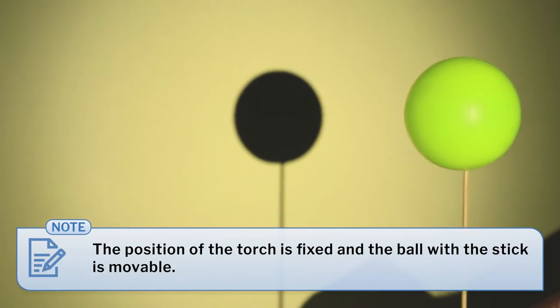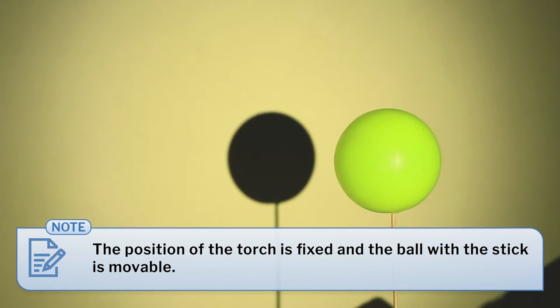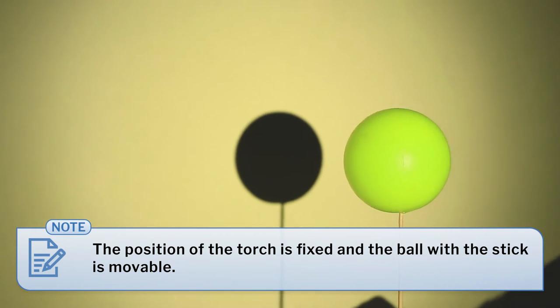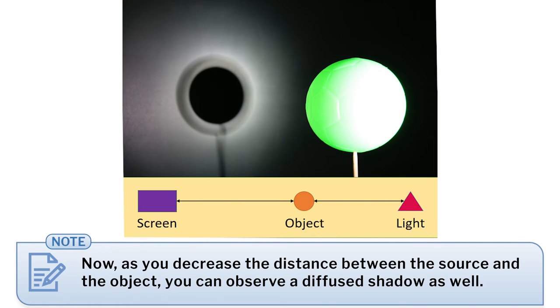As the distance between the torch and the ball is increased, we can see the umbra. But if that distance is decreased, we see a little lighter shadow as well, that is the penumbra.